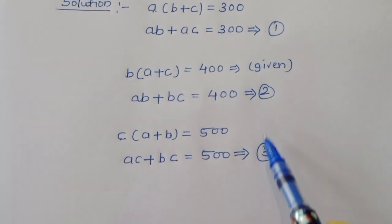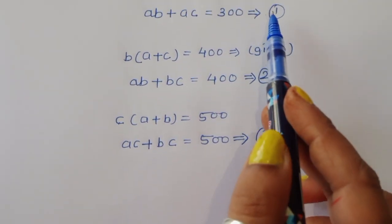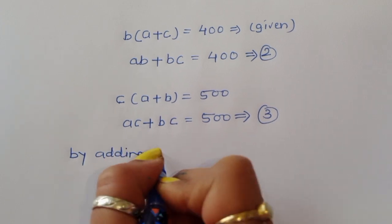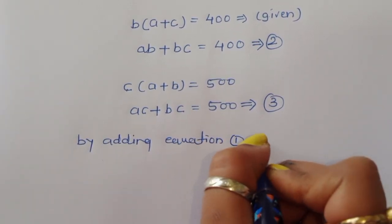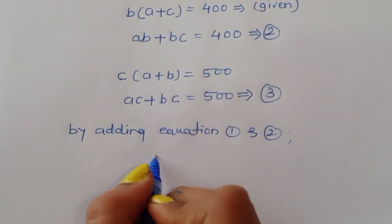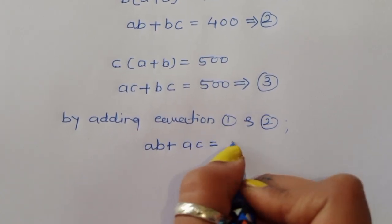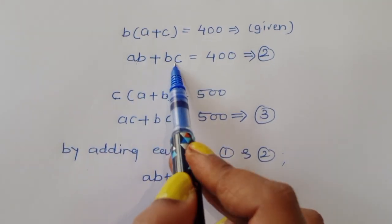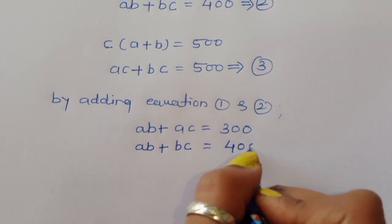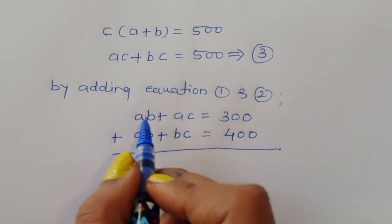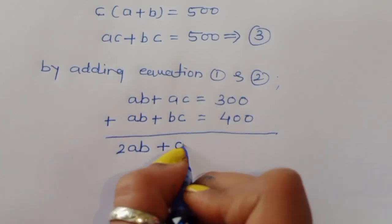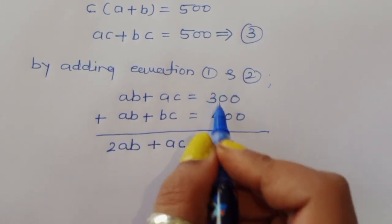We now have 3 equations. We are adding equation 1 and equation 2. Equation 1 is AB plus AC equals 300, and equation 2 is AB plus BC equals 400. Adding them: 2AB plus AC plus BC is equal to 700.